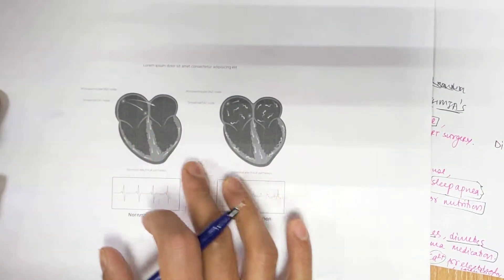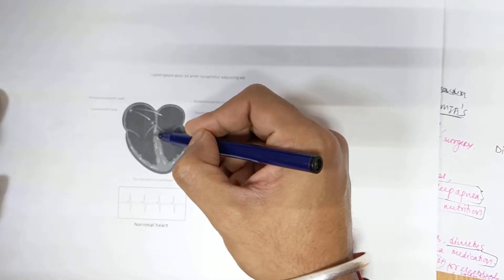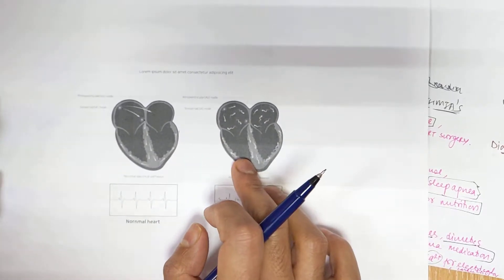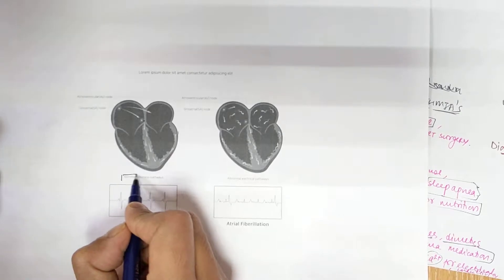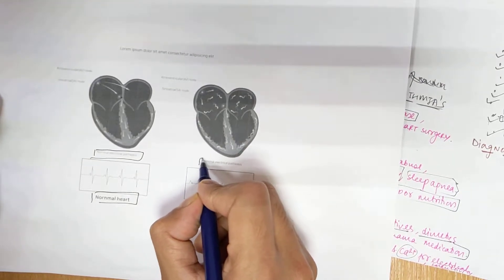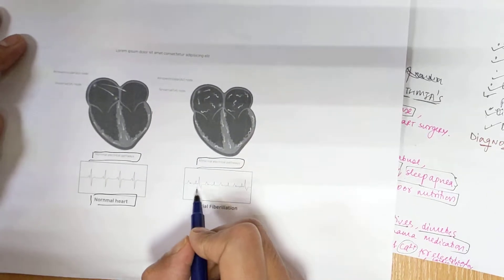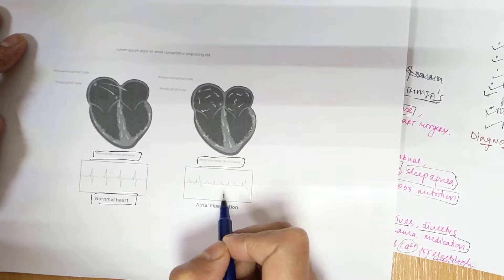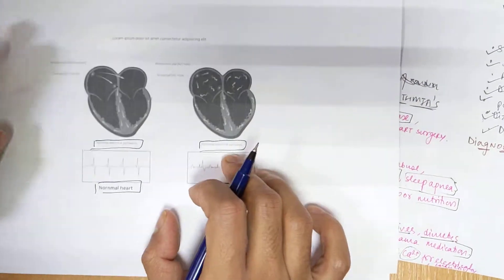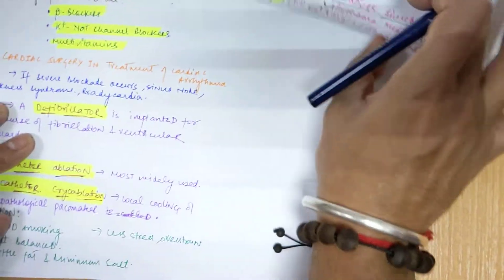Looking at this diagram, you can see the basic heart structure — the atria and ventricles. The SA node, then the AV node, followed by the bundle of His, and then impulses are transmitted to the walls of the ventricles. These are normal electrical pathways. A normal ECG shows normal PQRS waves. In atrial fibrillation, the electrical pathways are abnormal — you can see impulses going in different pathways, resulting in tachyarrhythmia or very high heartbeat.